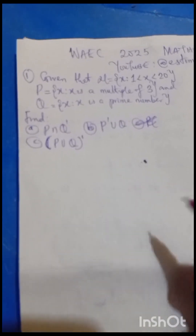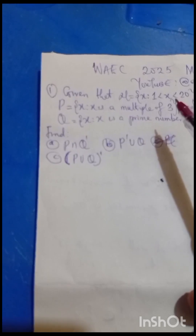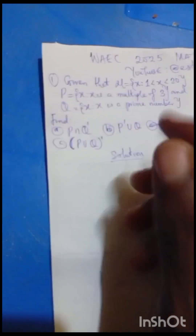Question one is talking about sets. It says that the universal set is S such that one is less than x, less than 20. That is, x is the value of the number we are talking about. When you see one less than x, that means numbers greater than one. And likewise x less than 20 means numbers less than 20. We have been given a range; the best way to do this is to interpret it back.